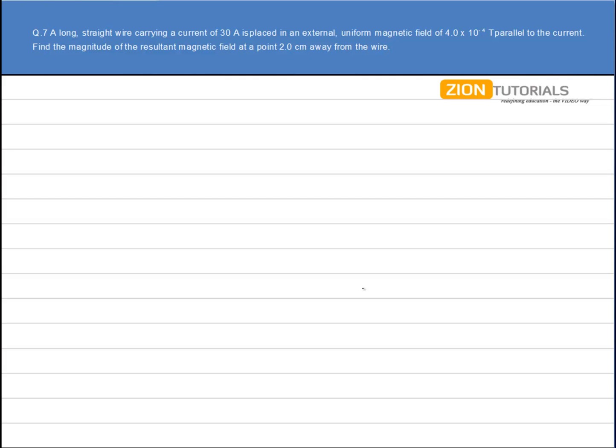A long straight wire carrying a current of 30 ampere is placed in an external uniform magnetic field of 4×10^-4 tesla parallel to the current. We have to calculate the magnetic field at a point 2 cm away from the wire.